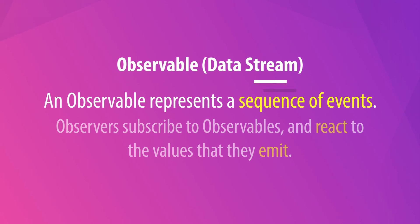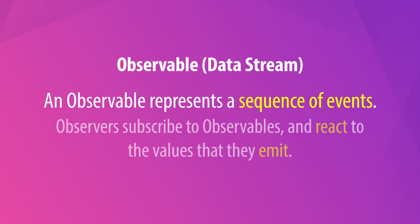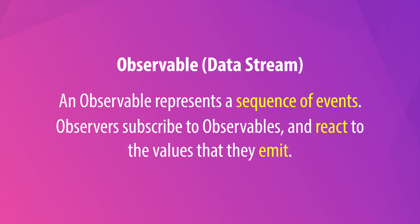An observable represents a sequence of events. Each event results in the observable emitting a value. Observers subscribe to observables and react to the values that they emit. Every flavor of reactive extensions must follow a contract that defines how observables should be implemented.